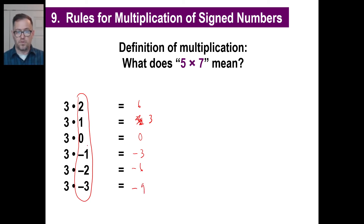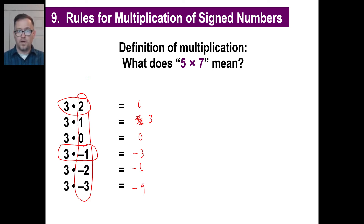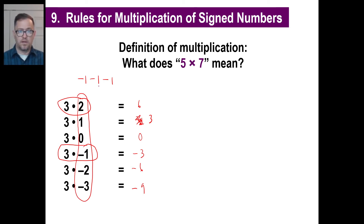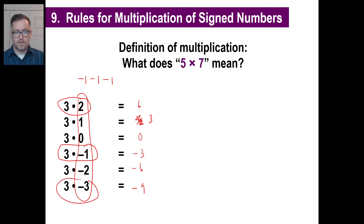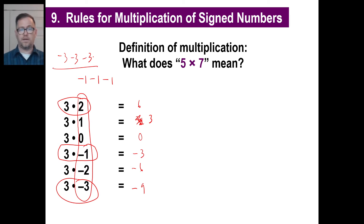You can understand what this means — 3 times 2 means 2 threes, or 3 twos. You can even understand 3 times negative 1: that means a negative 1 sitting there, and another negative 1, and another negative 1 — there are 3 of them. Negative 1 minus 1 minus 1: that's negative 1, negative 2, negative 3. So there's your answer. That makes logical sense. You can even visualize 3 times negative 3 — three groups of negative 3, like 3 clowns, 3 manhole covers, 3 shoes, whatever.